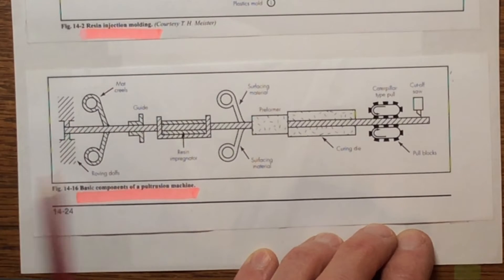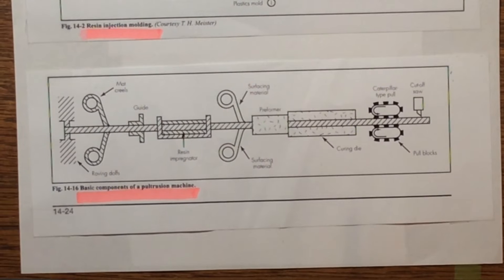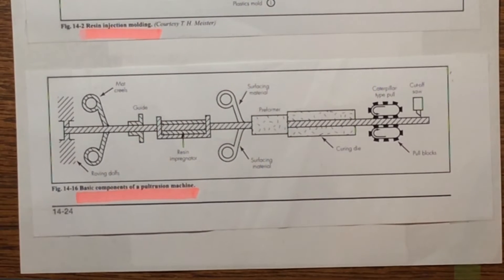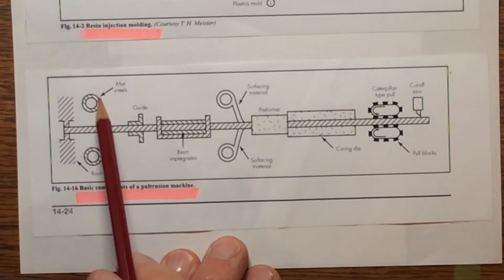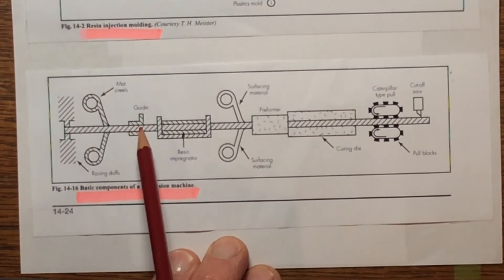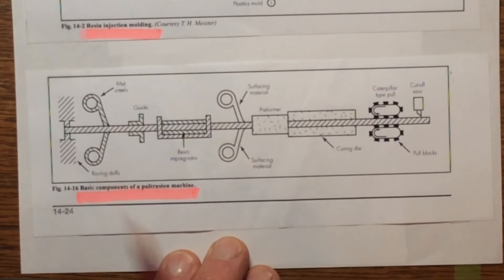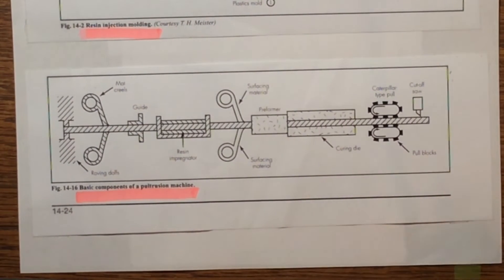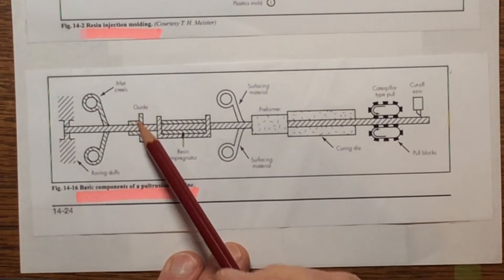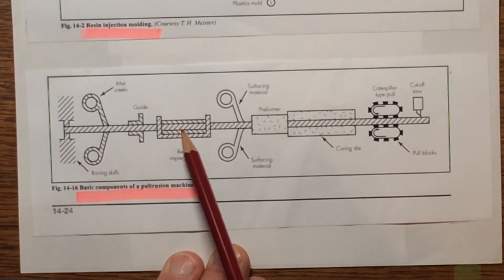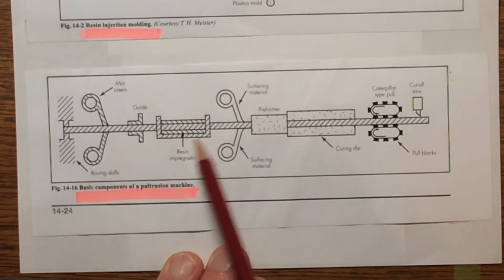And it all starts back here on the left hand side with, again, a series of all these yarns in these spools, you know, lots of them. And then they're all brought together. And here's these creels that are all brought together in this guide. So, you know, what starts off as a single strand now becomes multiple, multiple, multiple strands together in this guide here. And then it again goes through a resin bath or a resin impregnator. All right. And so all this goes through and gets completely wetted out and then starts to go through.